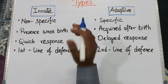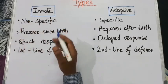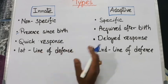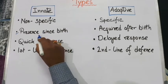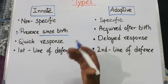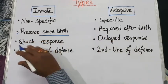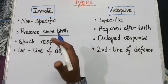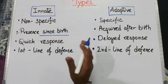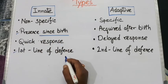This type of immune system is present in our body since birth — it is inherited from our parents. The innate immune system has a quick response and acts as the first line of our body's defense system.